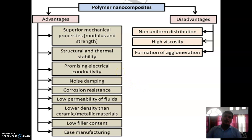Now about the advantages of polymer nanocomposites. Firstly, they have superior mechanical properties. They have structural and thermal stability. They have promising electrical conductivity. They have noise damping. They have corrosion resistance. Low permeability of fluids. Lower density than ceramic and metallic materials. They have low filler content and ease of manufacturing.